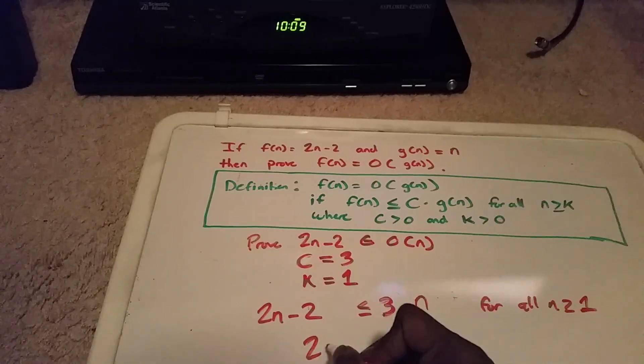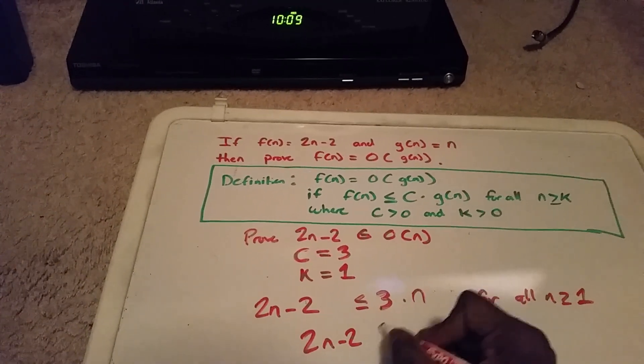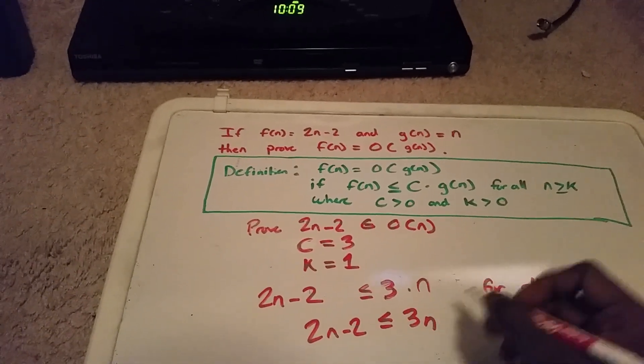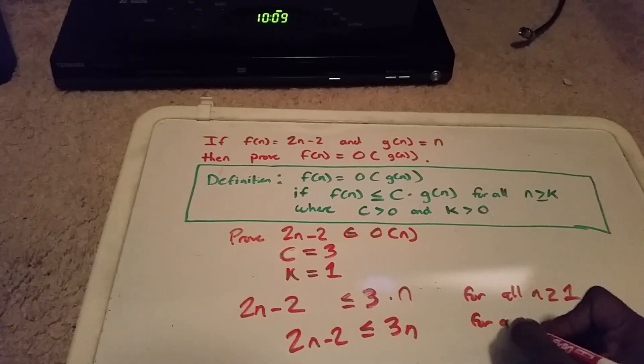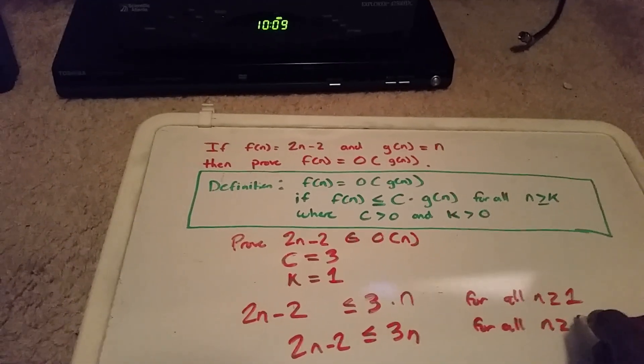Now we're going to prove this: 2n minus 2 less than or equal to 3n for all n greater than or equal to 1.